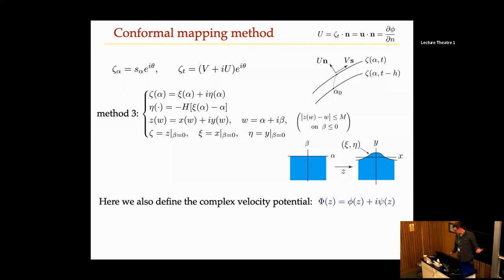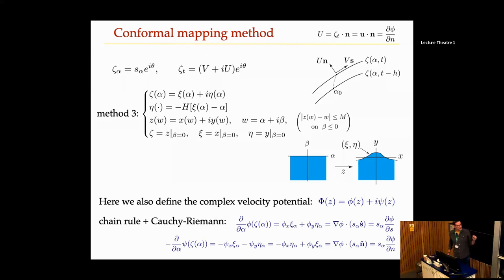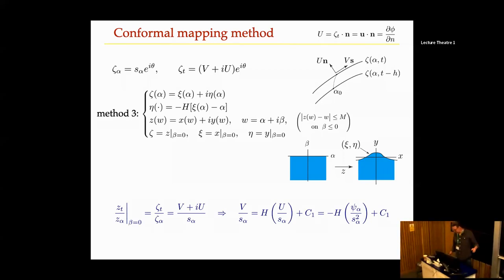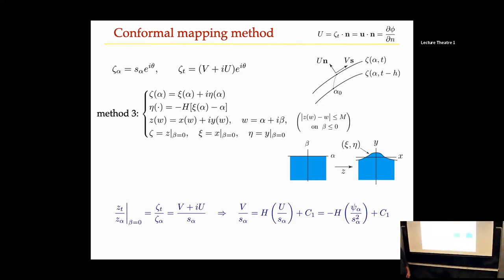You also have the complex velocity potential. With the Hilbert transform, you can take a tangential derivative of the conjugate variable psi — the stream function — and that tells you the normal velocity. You end up only applying Hilbert transforms instead of Cauchy integrals. Taking the time derivative of the conformal map and dividing by the space derivative gives another conformal function, so V over s-alpha and U over s-alpha are also related by a Hilbert transform — this determines what tangential velocity maintains the conformal relationship.